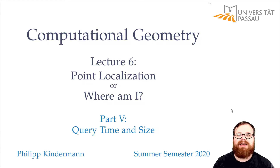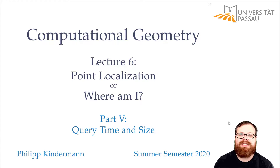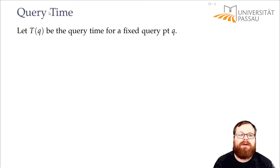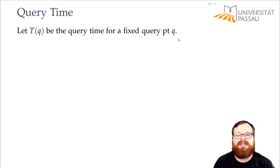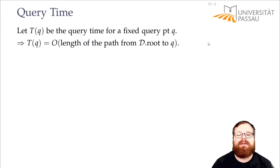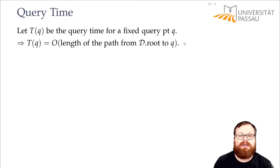In this part, we will analyze the query time and the size of the data structure that we constructed in the previous part. First, we want to figure out the query time — what is the time for a fixed query point Q? That means we want to compute the length of the path from the root of our data structure, our DAG, to Q.